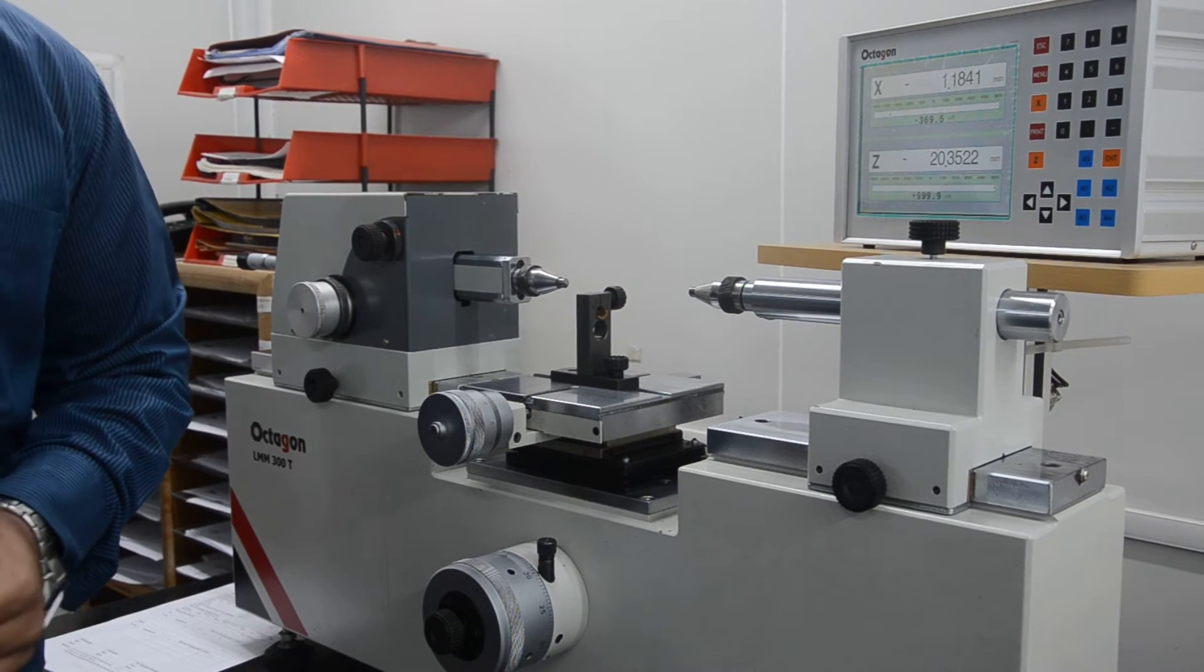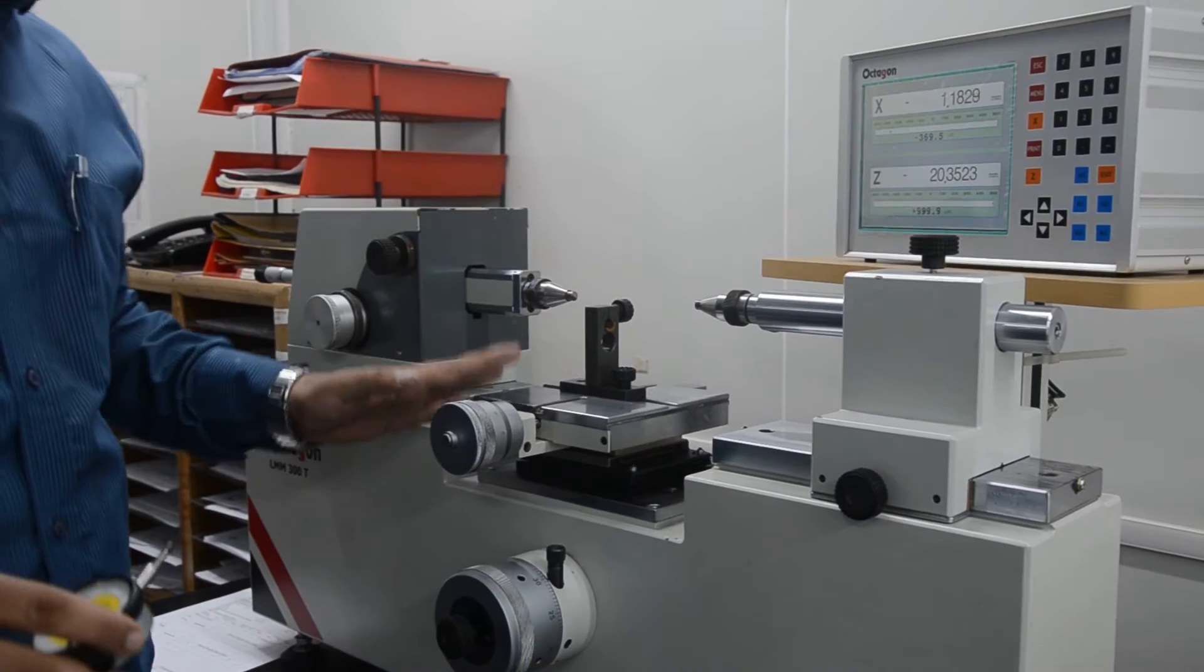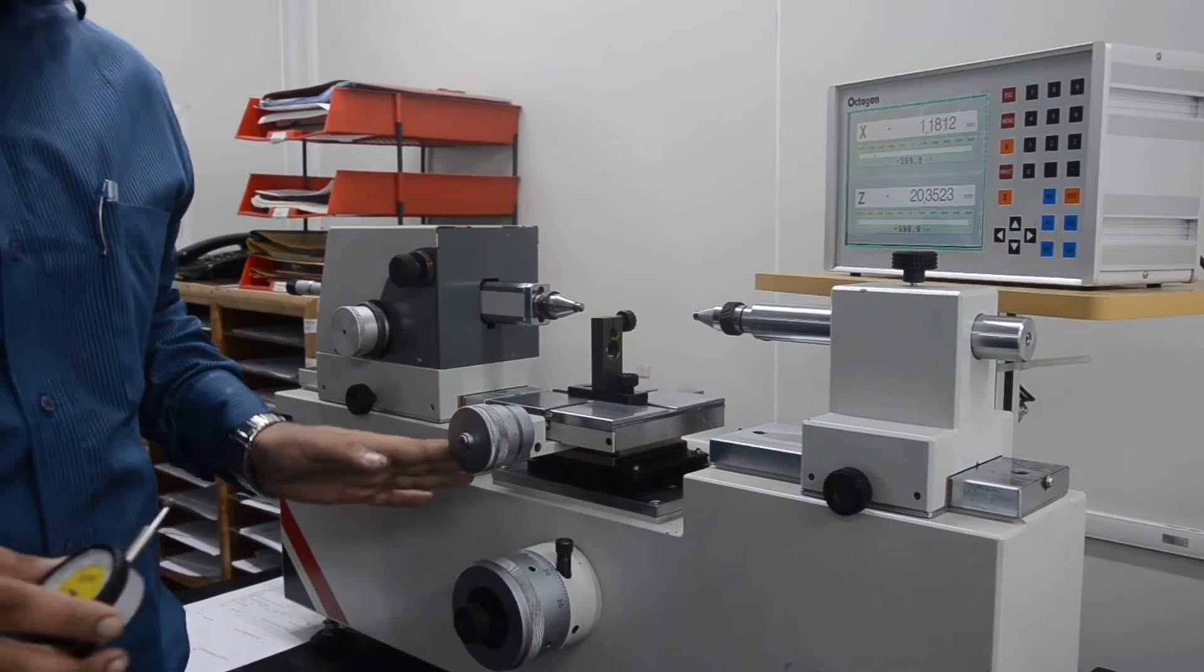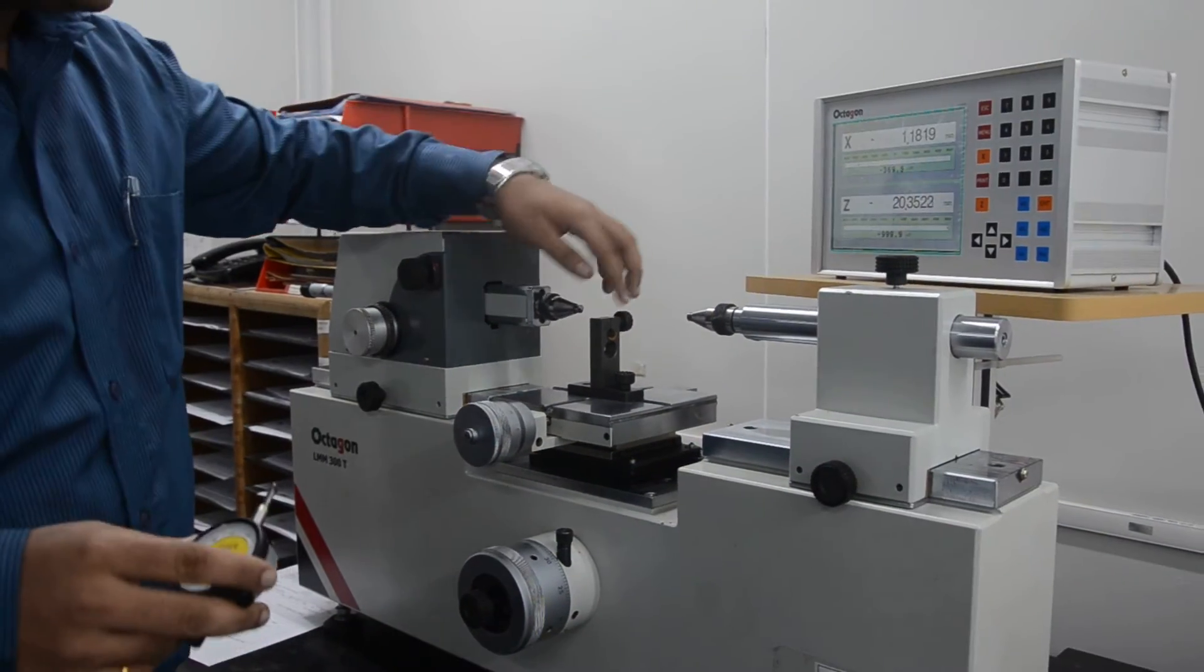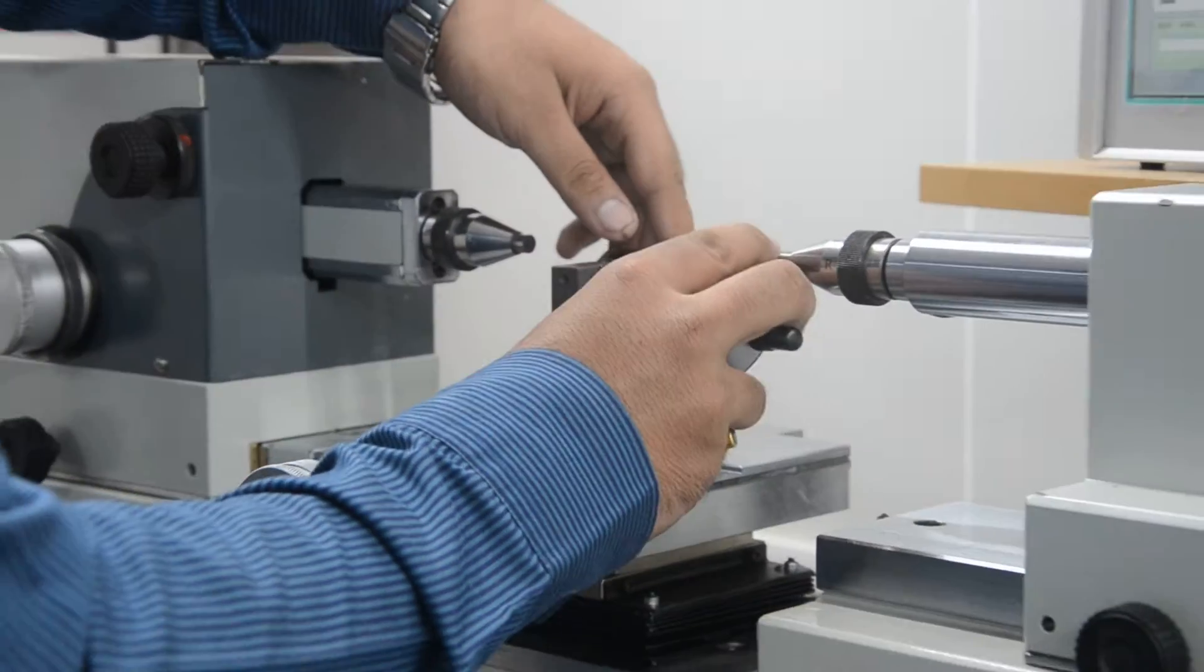So let's get started with the actual procedure of calibration. This kind of attachment has to be done before starting the actual procedure. This is the attachment in which I am going to insert this plunger dial gauge like that way.